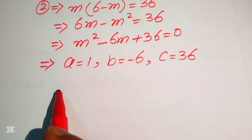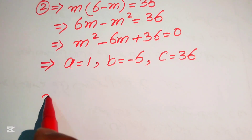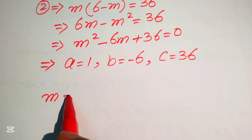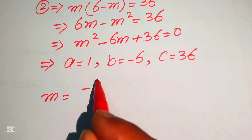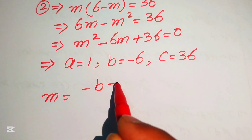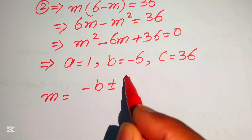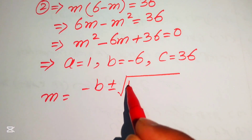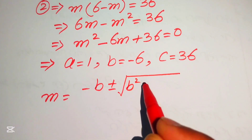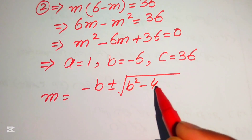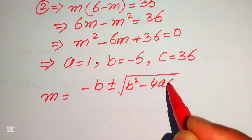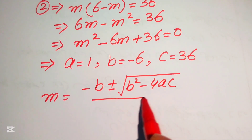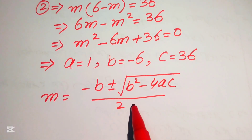We state the quadratic formula as: minus b plus or minus the square root of b squared minus 4 times ac, divided by 2 times a.